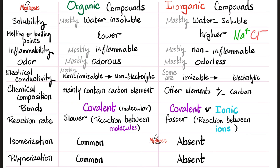Chemical composition: organic compounds are mainly made of carbon elements; inorganic compounds involve other elements like sodium, chlorine, iodine, magnesium, potassium, and sometimes carbon. Chemical bonds: organic compounds use covalent or molecular bonds; inorganic could be covalent or ionic. Reaction rates: organic reactions happen between molecules so they are slower; inorganic reactions are mostly between ions so they are faster. Isomerization is very common in organic compounds, not in inorganic. Polymerization: organic compounds do make polymers — many pieces bound to one another, like plastic. Inorganic compounds do not.